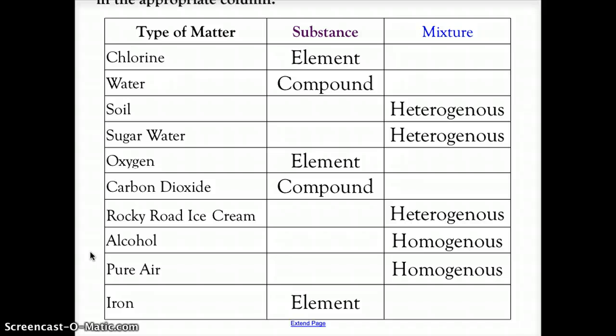Rocky road ice cream we already explained was heterogeneous. Alcohol is a homogeneous substance. Pure air is homogeneous, and actually we could probably talk about that being heterogeneous because as you go up through the altitude and pressures change, there's more or less oxygen in the different levels of our air. And then iron - that would be an element found on the periodic table. So hopefully you did pretty well in separating out these examples of matter into substances or mixtures, elements or compounds, heterogeneous or homogeneous.